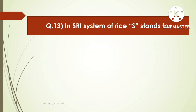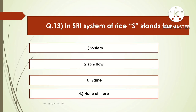The next question is: in the SRI system of rice, S stands for — options are system, swallow, or same. The right answer is system. SRI stands for System of Rice Intensification. It is a sowing method of rice.